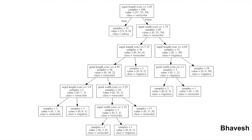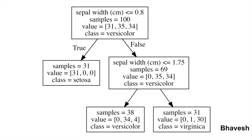Let's consider the iris dataset. If I decide to grow a decision tree on the iris dataset without keeping an upper threshold on max depth, you will see a very large decision tree grow. Chances are that this might overfit your training data and not perform well on your testing data. If you do proper hyperparameter tuning and play around with the max depth hyperparameter, you would reach something like a very small decision tree that performs well on both the training and testing datasets.